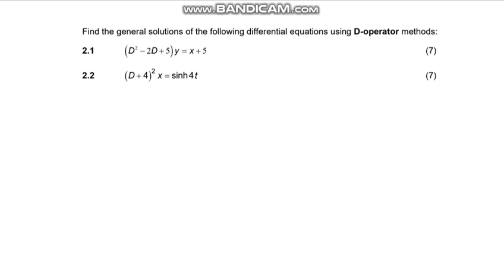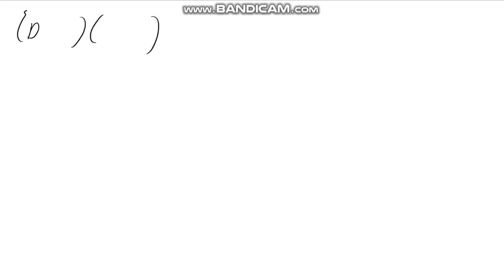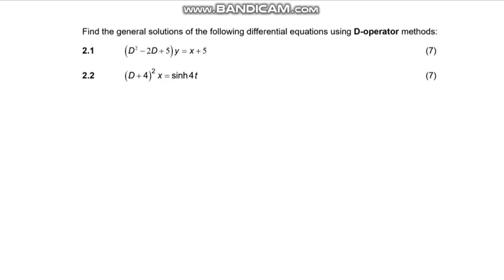Hi guys, in this video I'm going to be solving the operators. We're gonna start with 2.1. So for 2.1 we just have to change everything so the left-hand side will be equal to D. I'm finding the factors of that — D and D — and since the factors of this are difficult to find, we're just going to use the roots method because you can't find the factors of that equation.